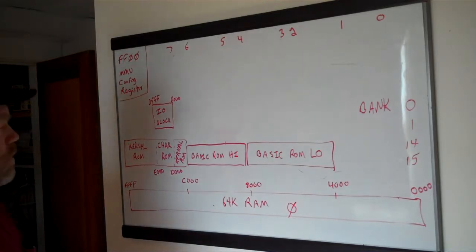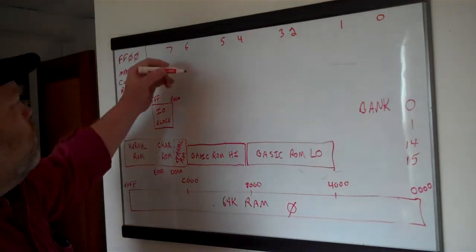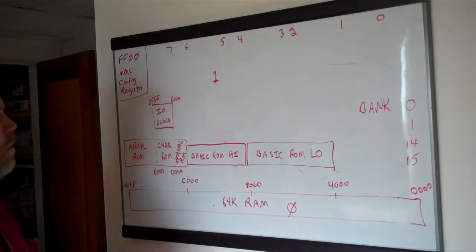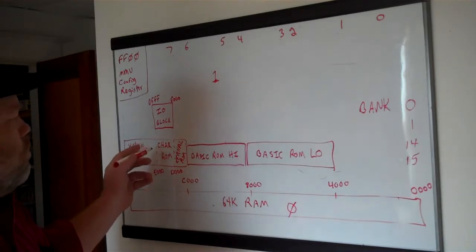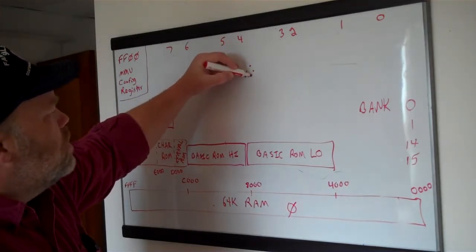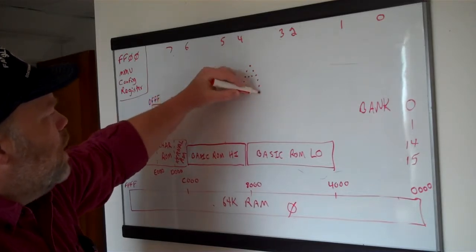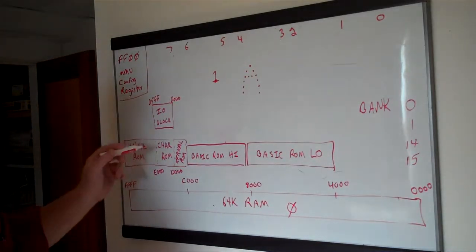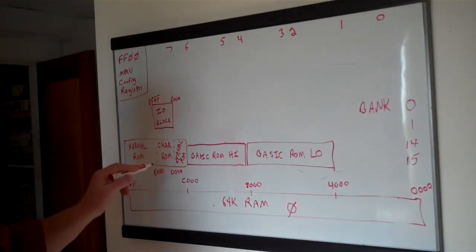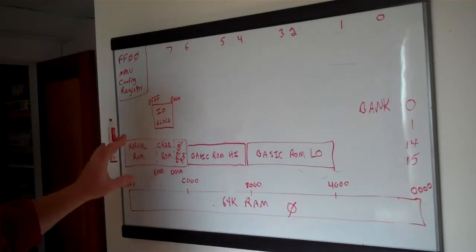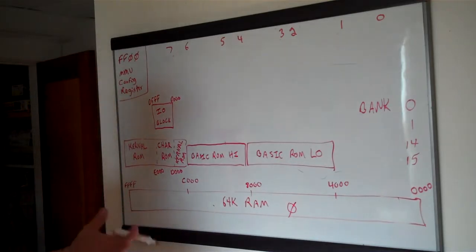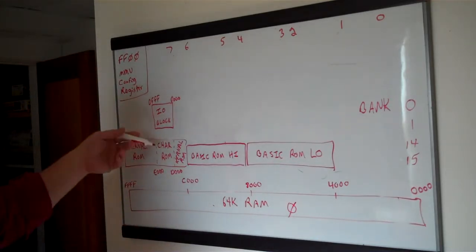From D000 to E000 is Character ROM — that's the font definitions for the text characters. When you put a character code like 1 in screen memory, that means 'draw an A,' and the VIC chip goes into Character ROM to find out how to render it. It gets 8 bytes which, by turning on the right bits, form the character shape. The VIC has its own bus to Character ROM, so it can always read from it — Character ROM doesn't have to be visible to the processor for the VIC to use it.